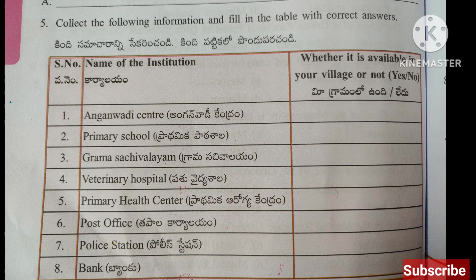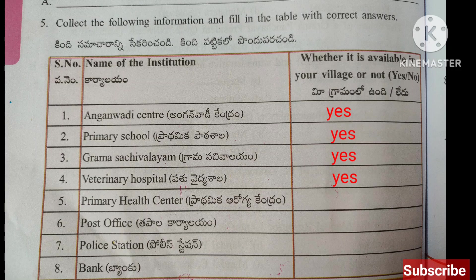Fifth question: Collect the following information and fill in the table. Name of the institution and whether it is available in your village. Anganwadi Center — Yes, Primary School — Yes, Grama Sachivalayam — Yes, Veterinary Hospital — Yes, Primary Health Center — Yes, Post Office — Yes, Police Station — No, Bank — No.